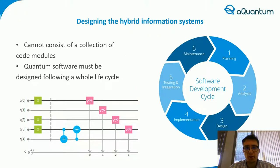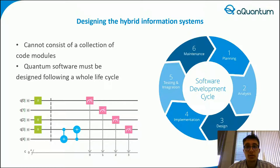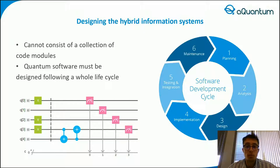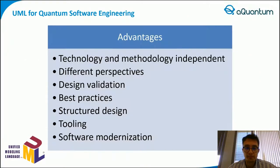The development of quantum or hybrid information systems cannot simply consist of a collection of code models, but should rather follow a whole life cycle. It does not matter how long the life cycle is, since what is certain is that the quantum software must be designed at some point. Software design defines the architecture, system elements, interfaces and other characteristics of the system. UML can help by gathering and analyzing software requirements and incorporating them into a programming design in a technology and methodology-independent manner.